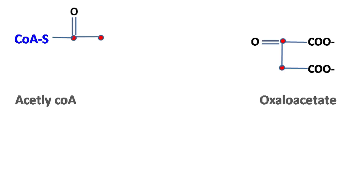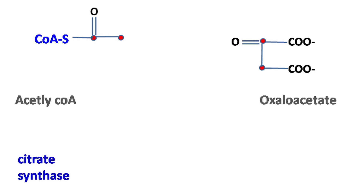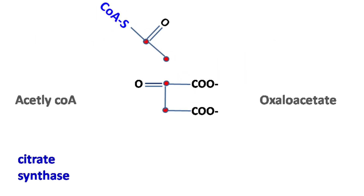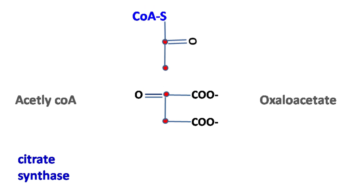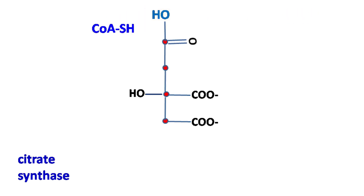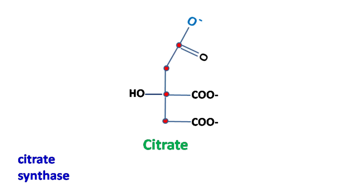The first step in the Citric Acid Cycle is condensation of Acetyl-CoA with Oxaloacetate to form Citrate. This reaction is catalyzed by the enzyme Citrate Synthase.